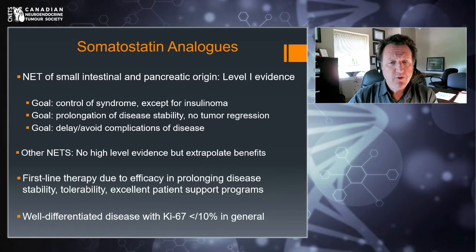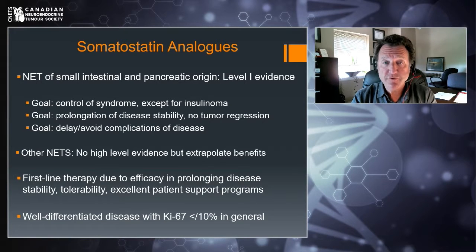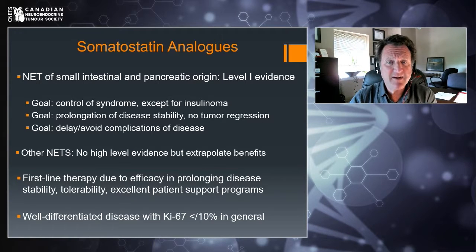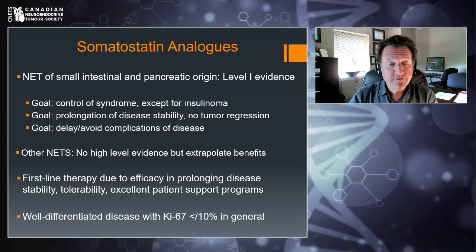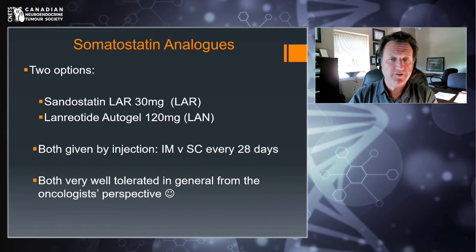Even though the best evidence is for patients with small intestinal and pancreatic neuroendocrine tumors, many patients with other neuroendocrine tumors also benefit from somatostatin analogs. They are first-line treatment due to clinical trial efficacy data, the fact that they are very well tolerated in general, and particularly in Canada, there are excellent patient support programs. We usually consider this for patients with well-differentiated disease with a KI-67 index less than 10%, although there are always exceptions.